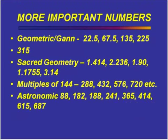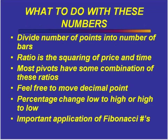We use sacred geometry numbers, multiples of 144, and astronomic numbers taken off NASA tables. The market basically talks to us in a language of numbers if we'll only listen. What we're basically doing with these numbers is dividing the number of points by the number of bars to get a ratio, and that ratio is going to give us some idea of how important a pivot could be.